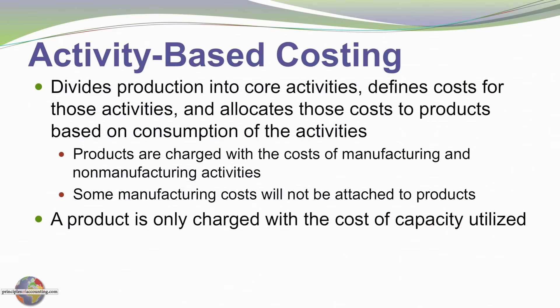Activity-based costing divides production into core activities, defines cost for each of those activities, and allocates those costs to products based on consumption of the activities. Products are charged with the cost of manufacturing and non-manufacturing activity, and some manufacturing costs don't get assigned to production at all.